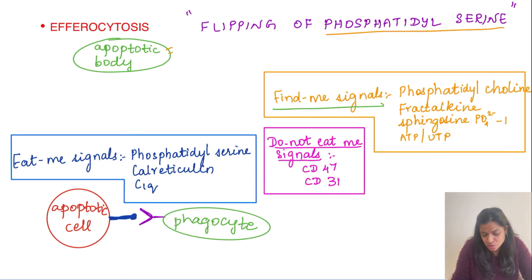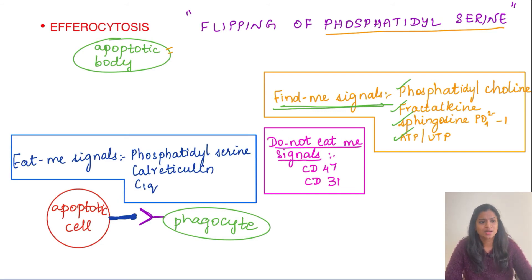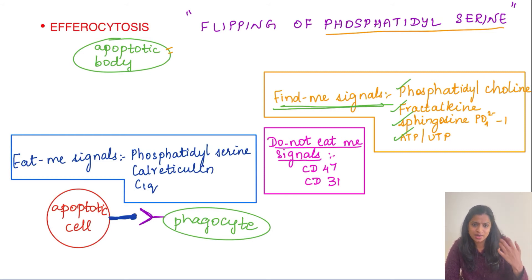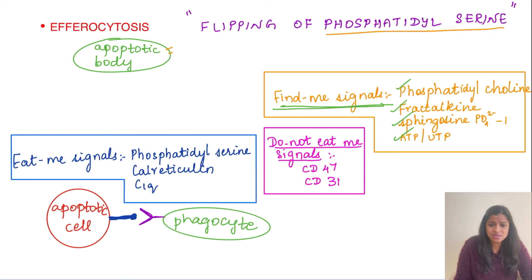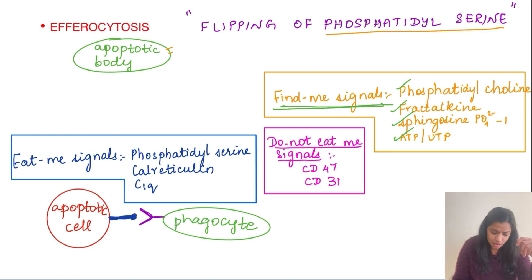To attract macrophages, the apoptotic body releases find-me signals, which include phosphatidylcholine, fractalkine (a chemokine), sphingosine-1-phosphate, and nucleotides like ATP and UTP. These released signals attract phagocytic macrophages to the site of the apoptotic body. Find-me signals and eat-me signals have been asked in institute papers like AIIMS and JIPMER, so remember these.